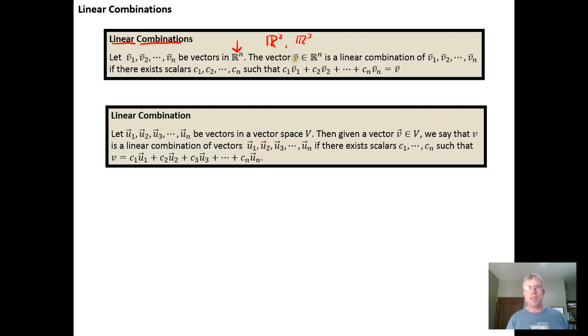Then we said the vector V in R^n is a linear combination of those vectors if we can find scalars such that we can write V as a linear combination using the scalars of the vectors we pulled from R^n.